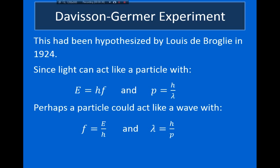One very important thing to understand about de Broglie waves is that the standard wave relationship — speed equals frequency times wavelength — does not hold for de Broglie waves. We cannot say that the de Broglie frequency times the de Broglie wavelength equals the velocity of the particle. Let me show you mathematically that this won't work out.